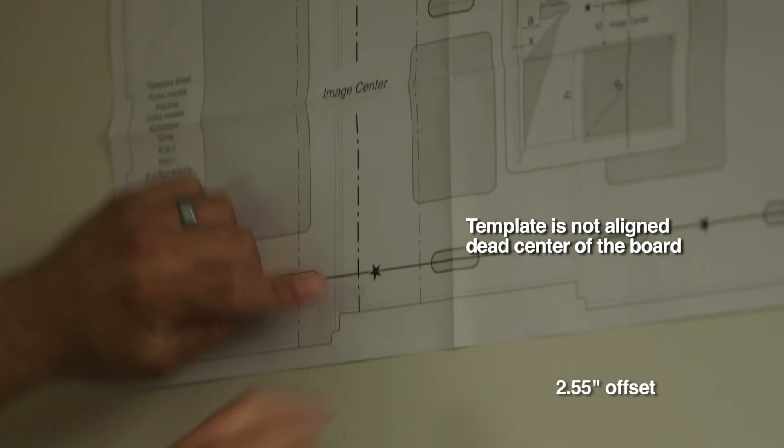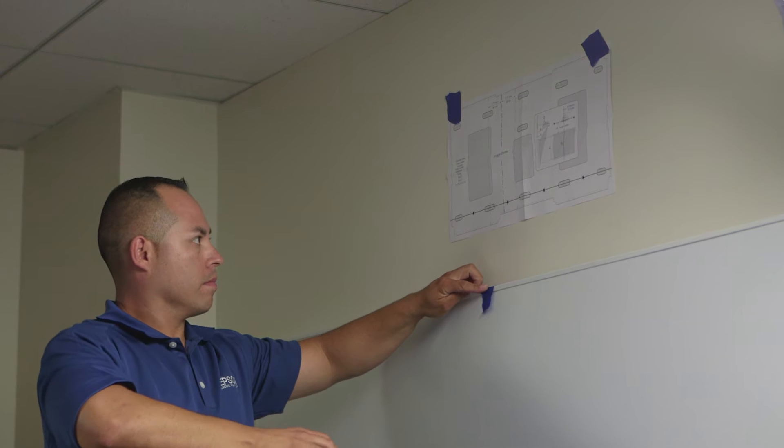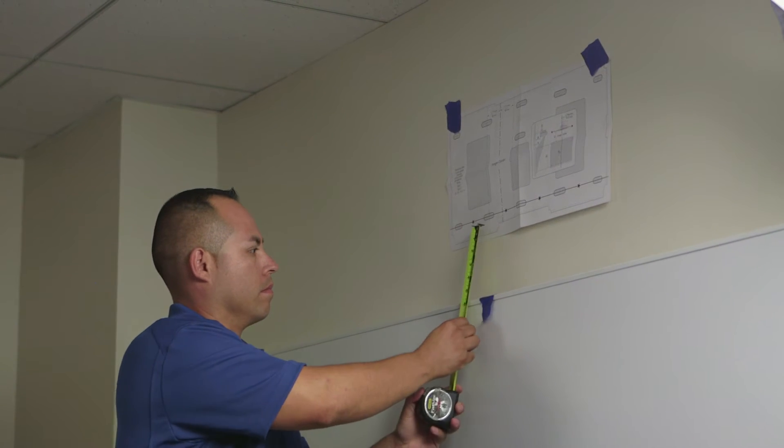Please note that the template sheet is placed 2.55 inches to the right of the center of the board to account for the projector lens which is not in the center of the projector.